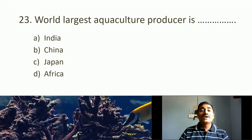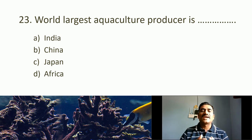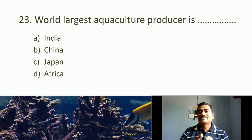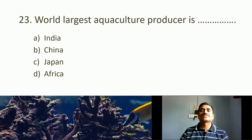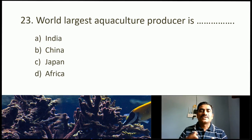Twenty-third MCQ: World's largest aquaculture producer is? Options: India, China, Japan, Africa. China has more water resources and is the largest aquaculture producer in the world.